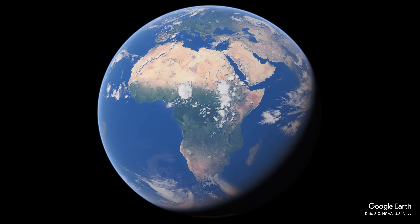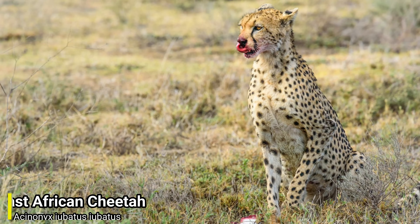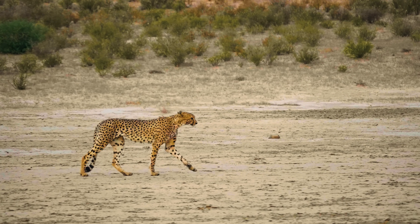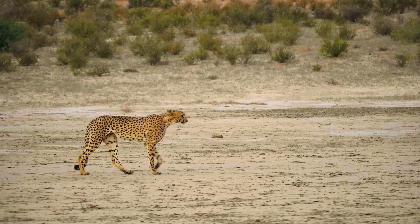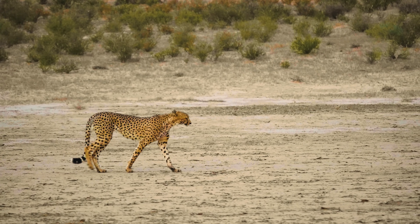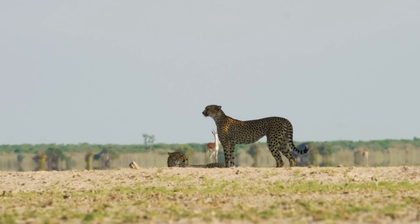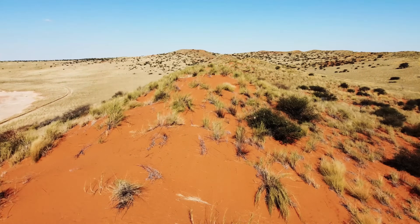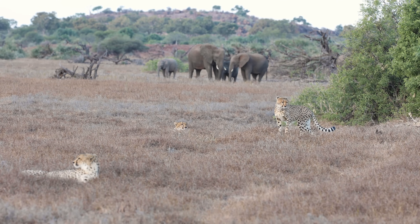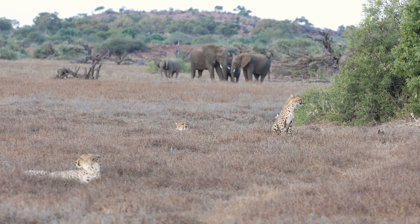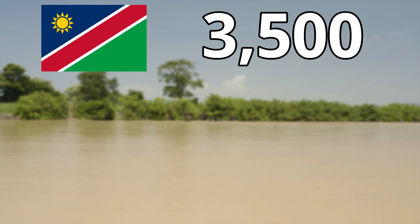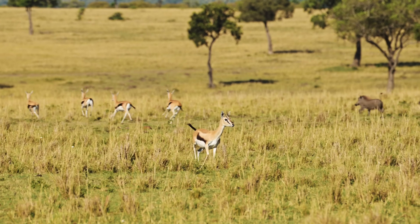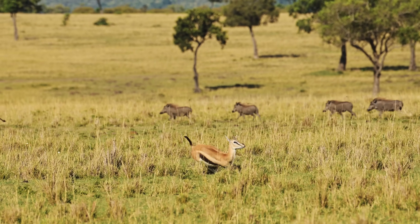The first continent we will be taking a look at is Africa, and the animal that we will be focusing on is the South African cheetah. The South African cheetah, also known as the South East African cheetah, is a cheetah subspecies native to East and Southern Africa. They are mostly found in lowland areas and deserts, and a large number of them are found in the Kalahari Desert and the Okavango Delta. This subspecies is found in quite a few different African countries, but the majority of them are found in Namibia, Botswana and South Africa. In these countries this cheetah mostly feeds on antelopes and other small fast creatures.